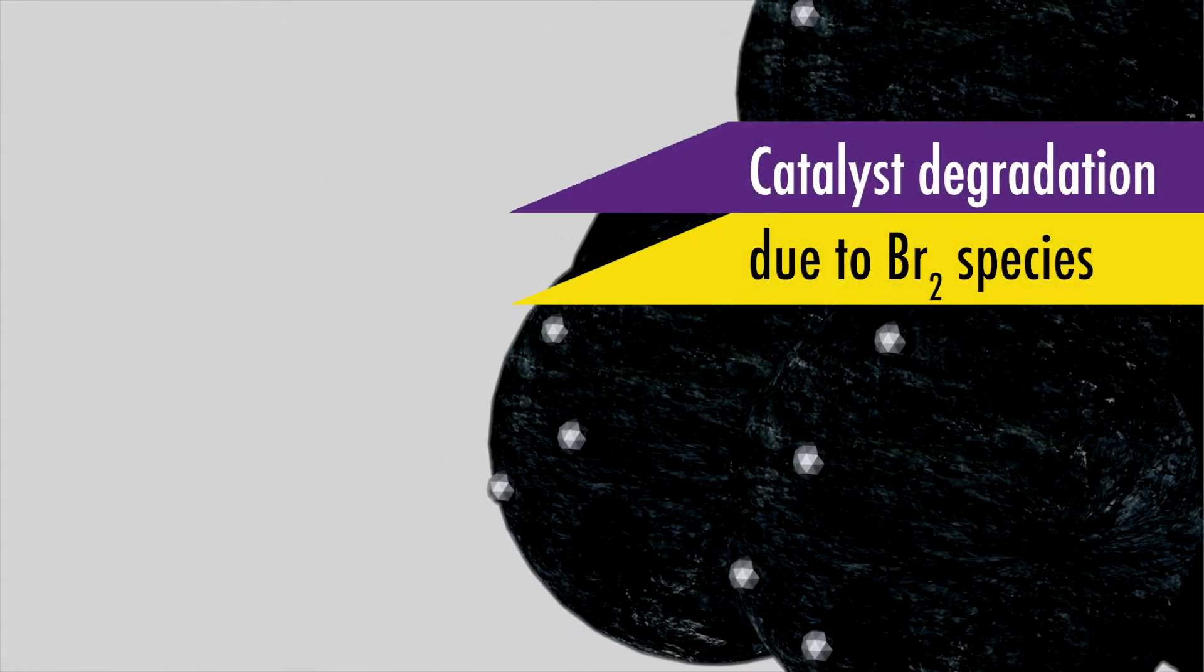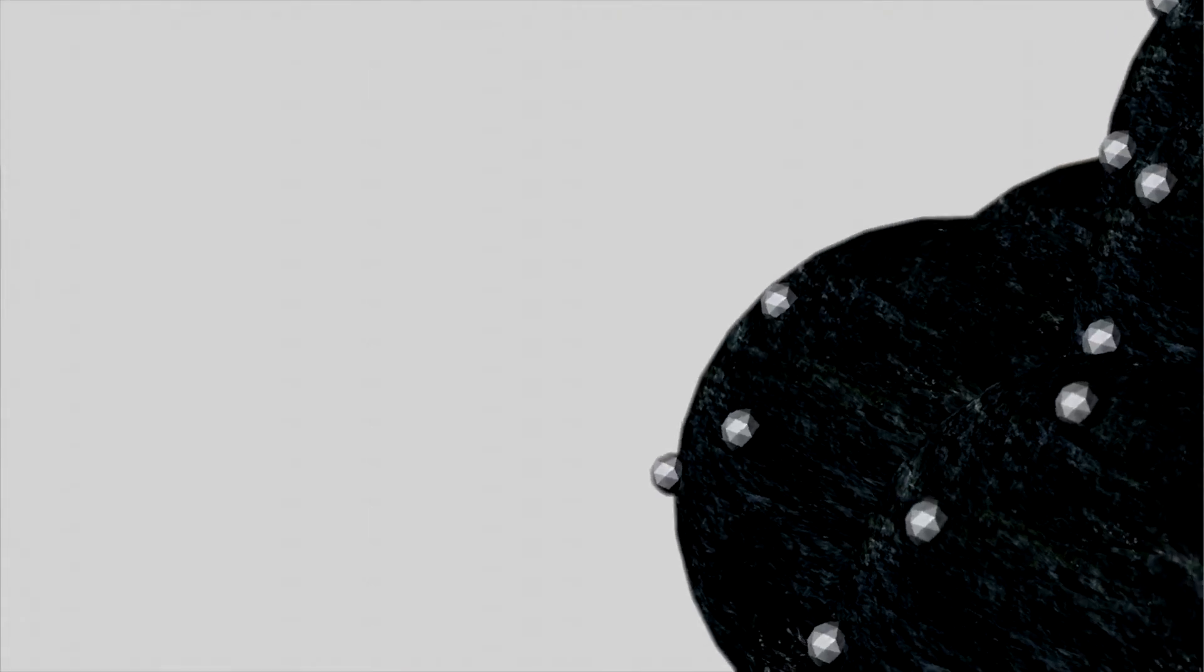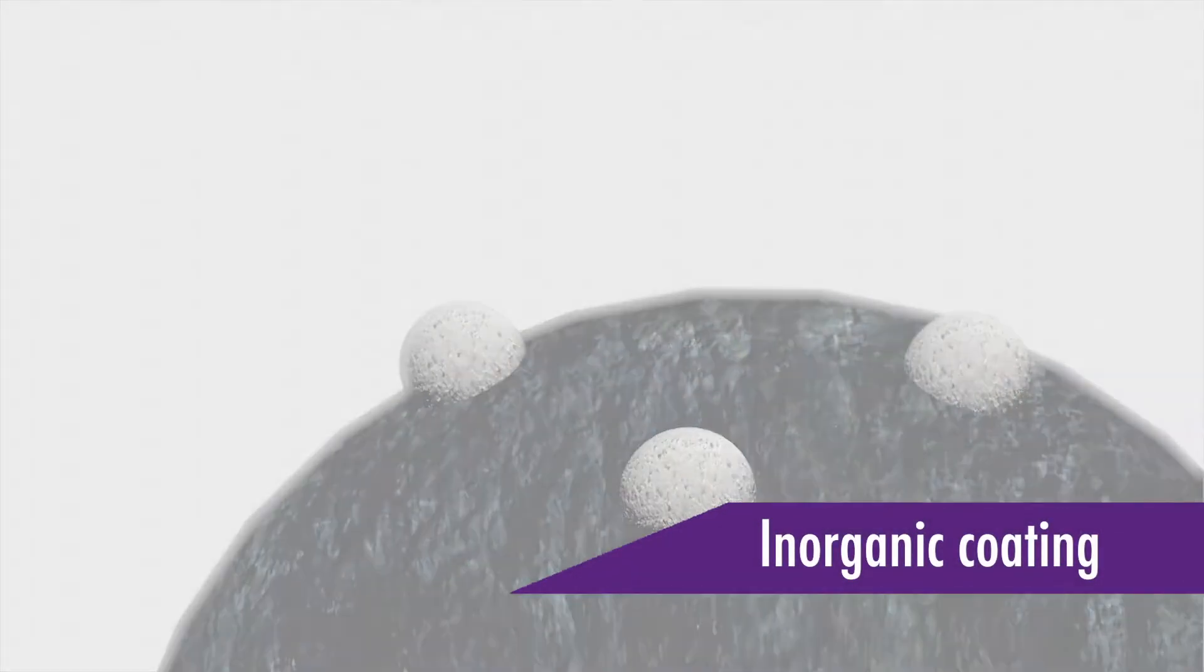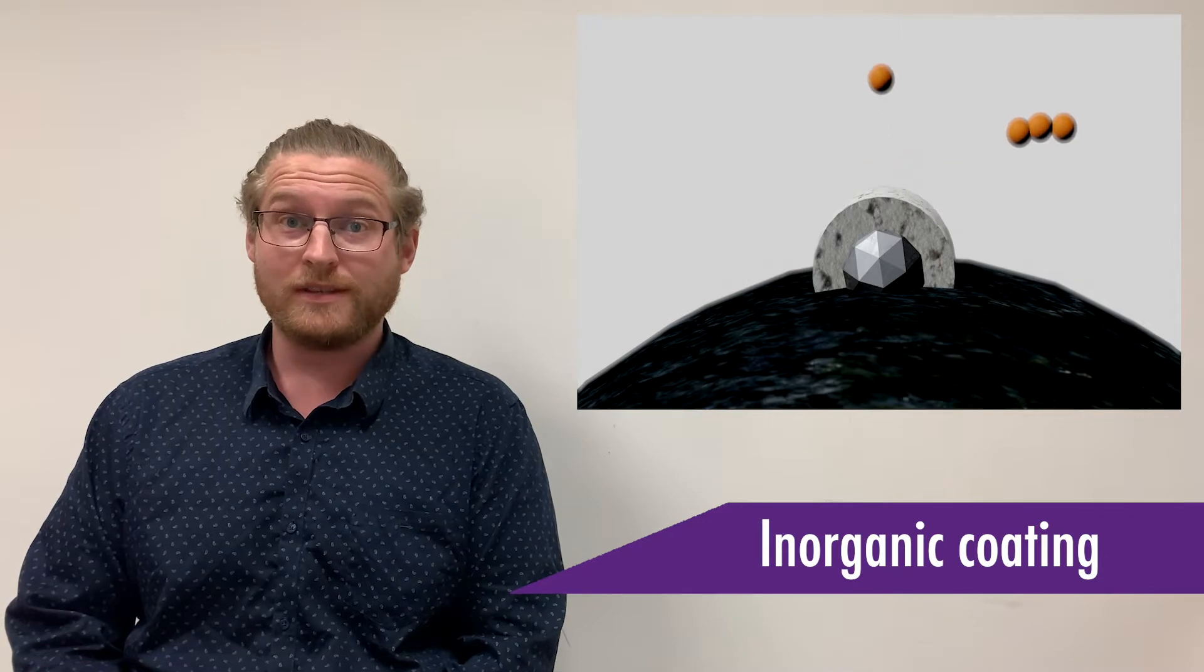Unfortunately, the catalyst is degraded by bromine species which have crossed over the membrane, which results in platinum dissolution and performance loss. To solve this, I have developed inorganic coatings for the catalyst, which are deposited from the gas phase. This coating prevents bromide and tribromide from reaching the platinum surface, without inhibiting the hydrogen, thus preventing the catalyst degradation.